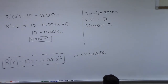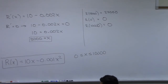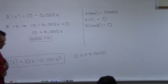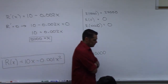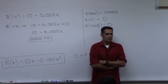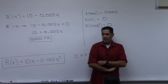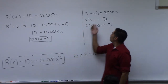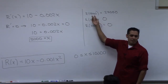So the maximum revenue is $25,000. But wait — go back and look at what the original question was asking: what should we charge? It's asking for the price, not the number of units or the revenue amount. Most students lose credit here by answering 25,000 or 5,000, but neither is the answer to the question.